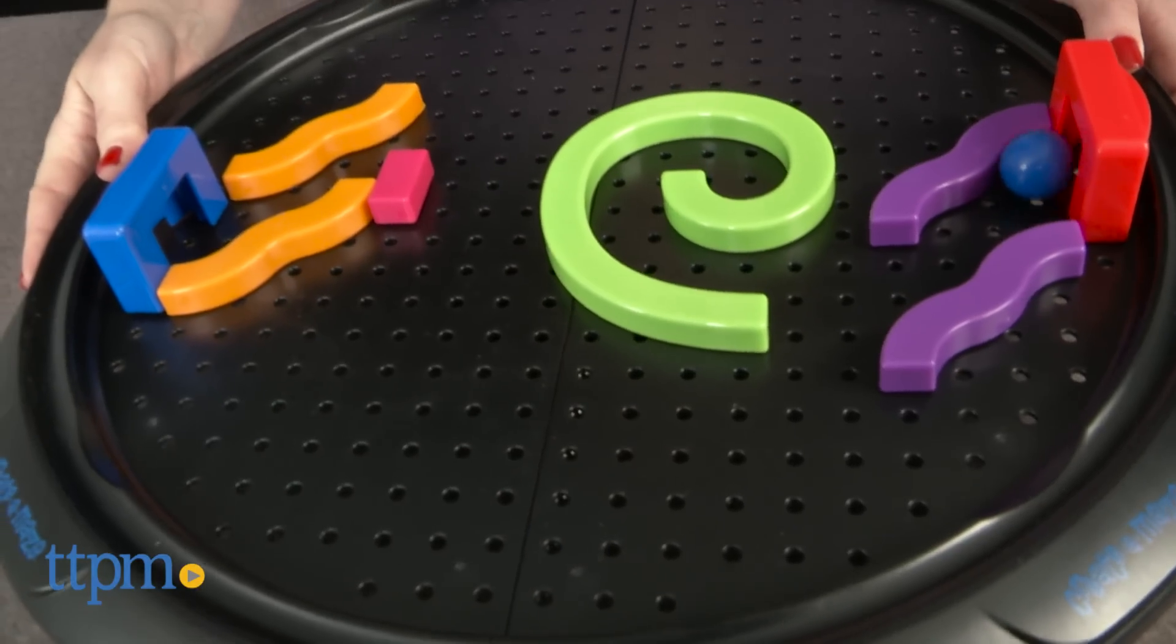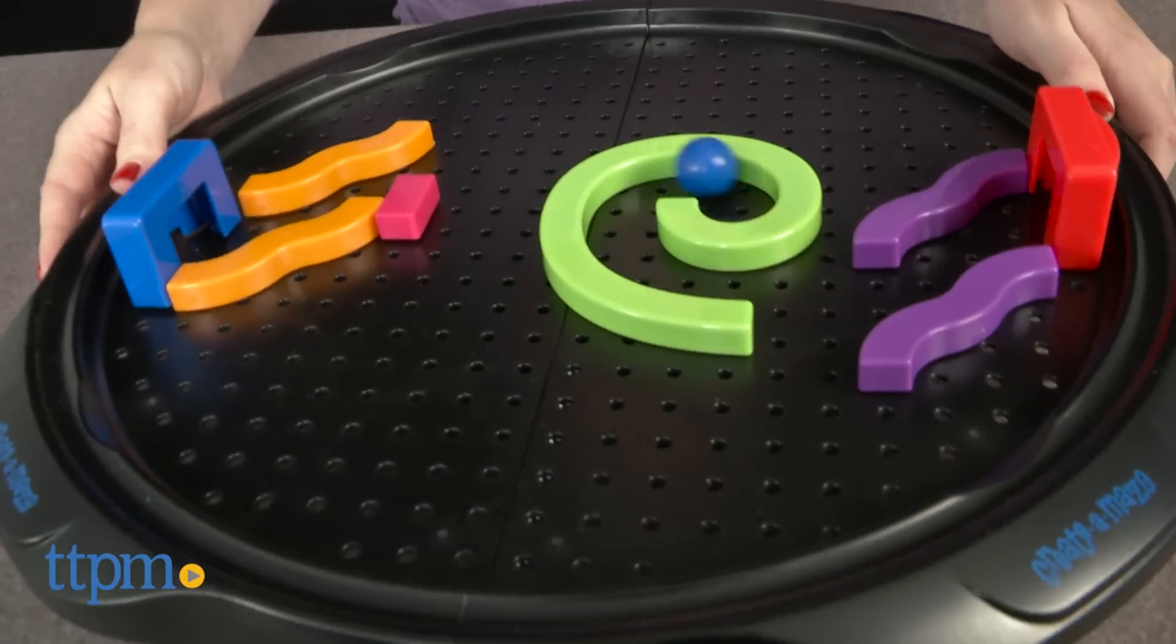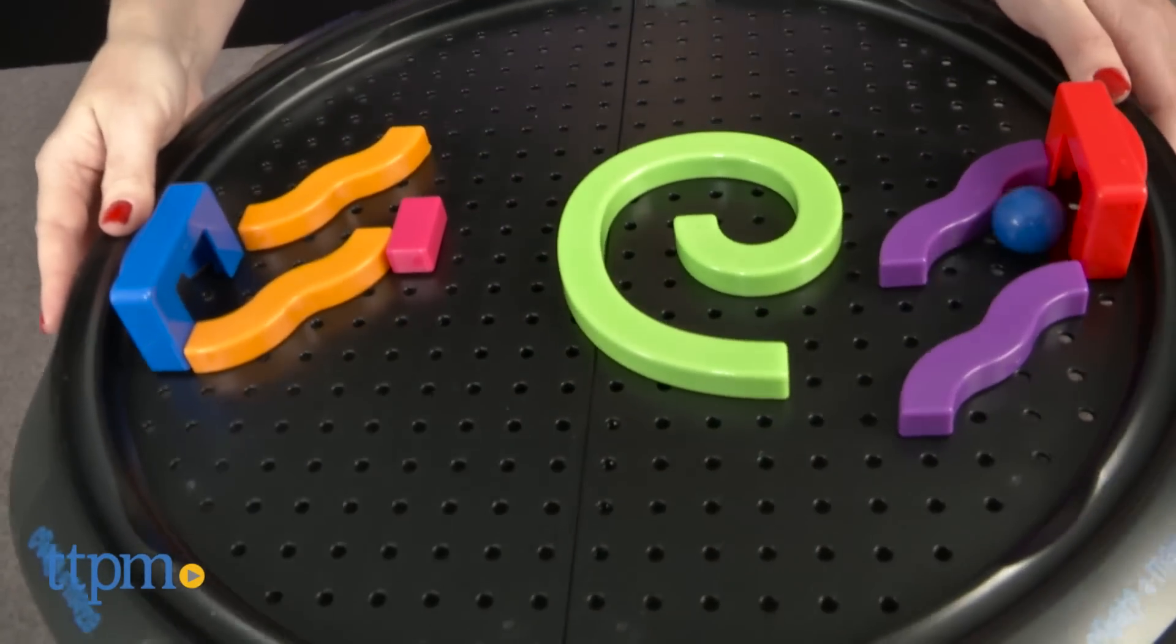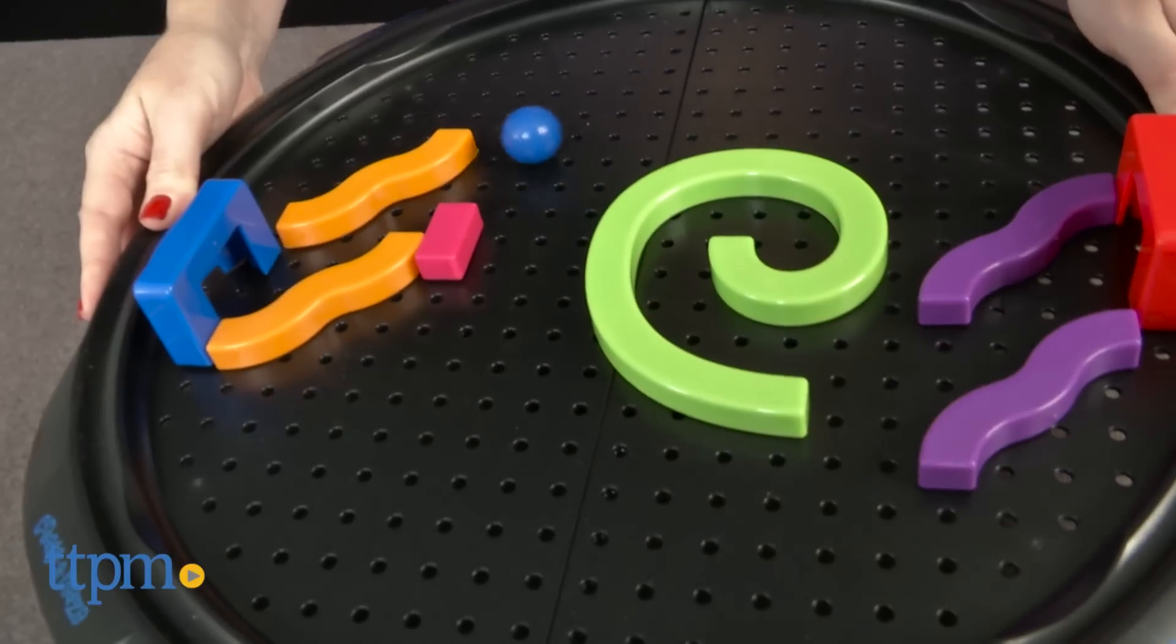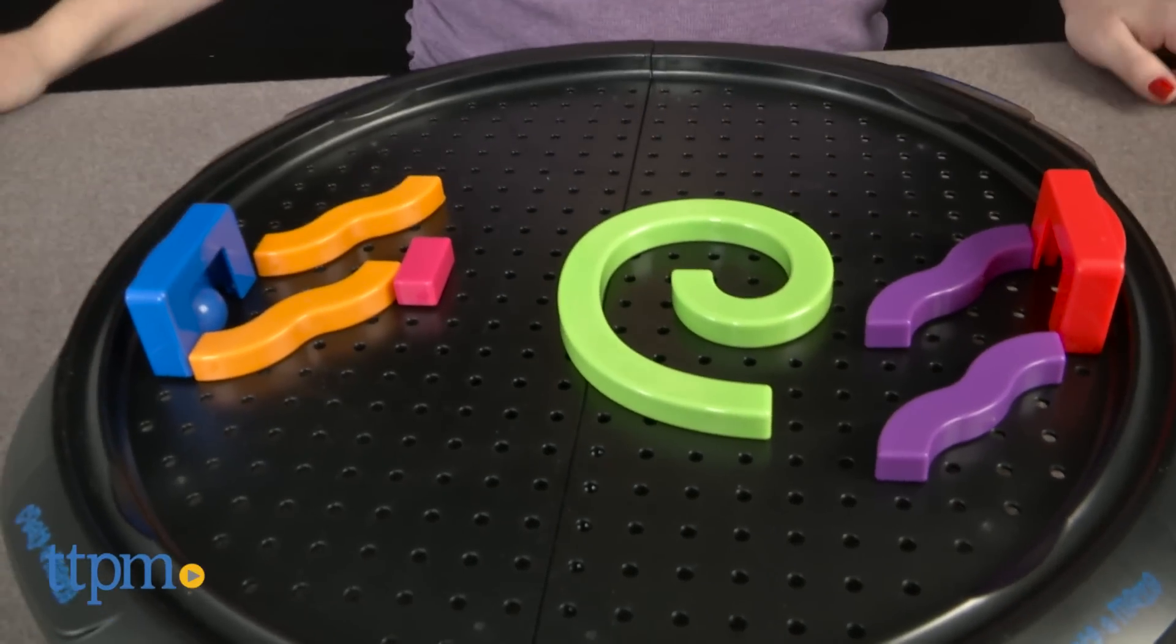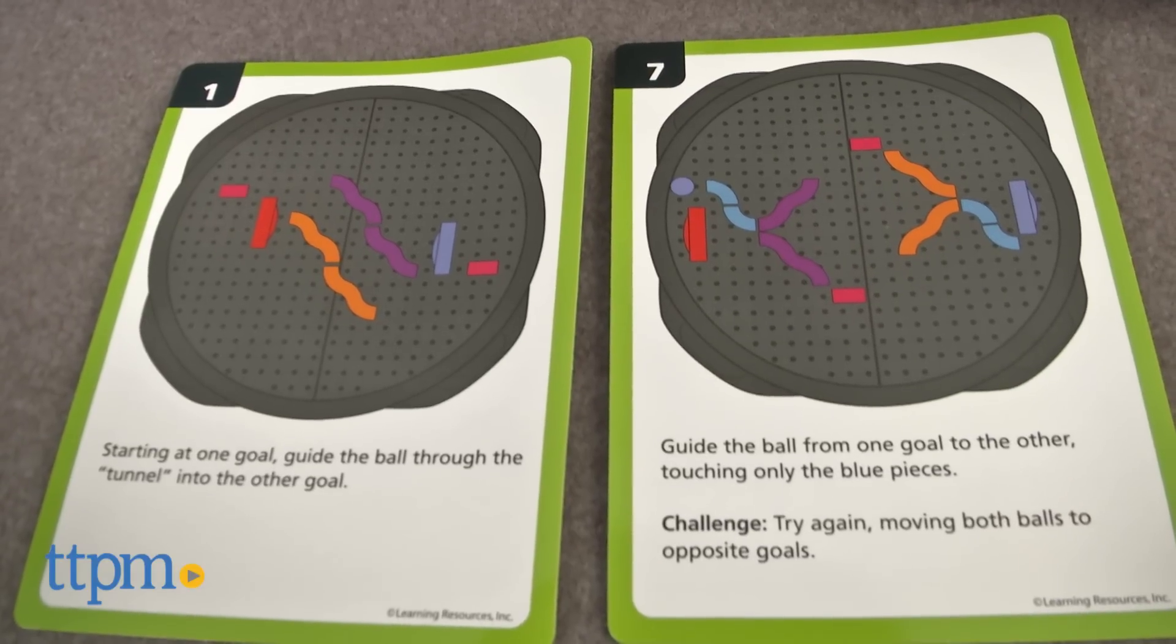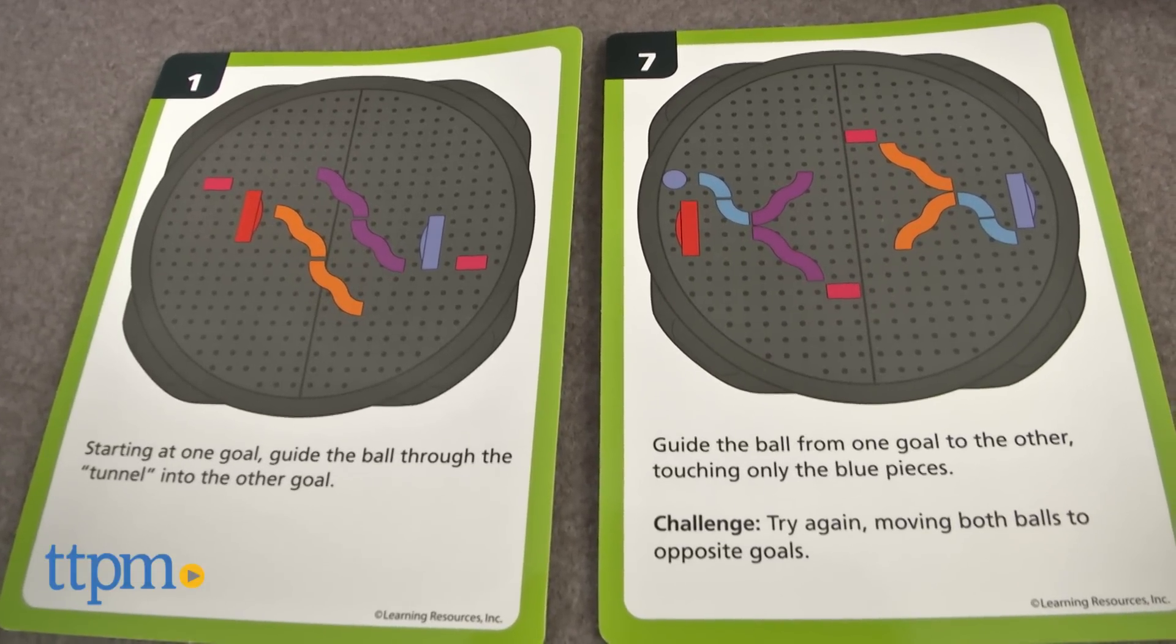The goal is to maneuver a ball from one goal piece to the other through the maze. Each of the ten activity cards shows a maze for kids to build and then gives directions on how to guide the ball or balls through the maze. For instance, the directions could be as simple as guiding a ball from one goal through a tunnel and into the other goal.